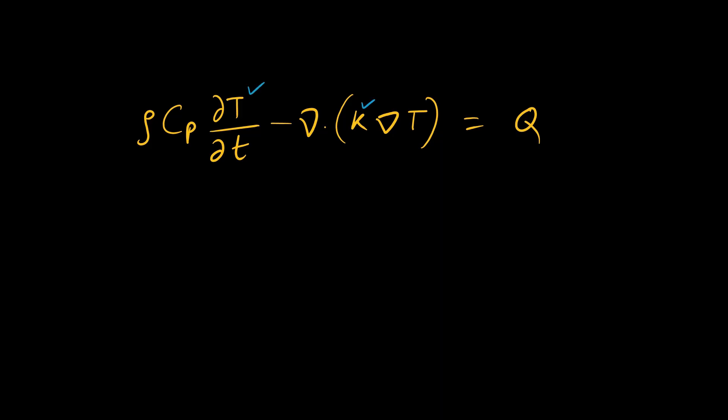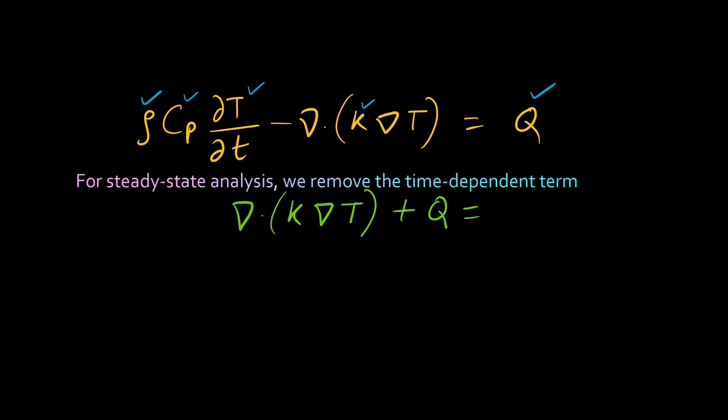Q is the heat source term. For steady-state analysis, we remove the time-dependent term, and then we can write ∇·(k∇T) + Q = 0. This equation tells us how the temperature distribution evolves in a conductor when Joule heating is present. Let's apply this to a simple example of a copper wire carrying current.